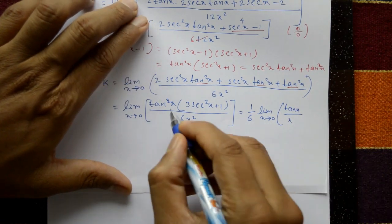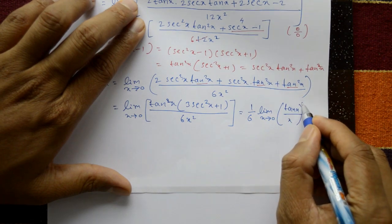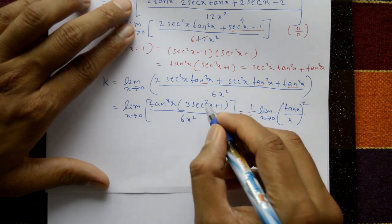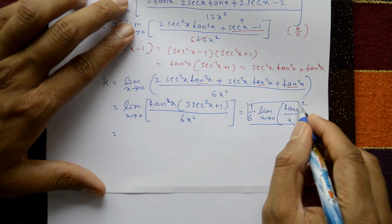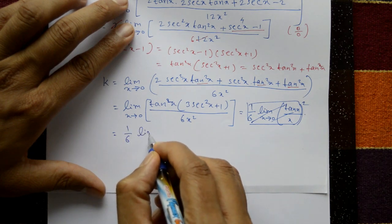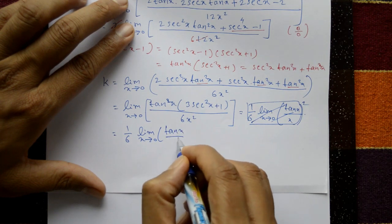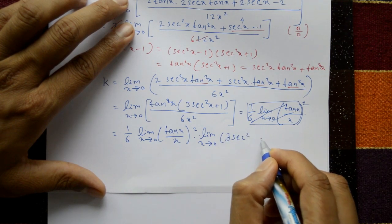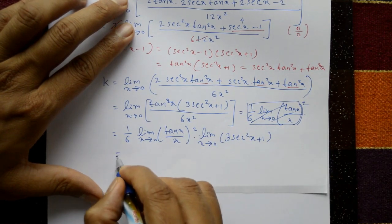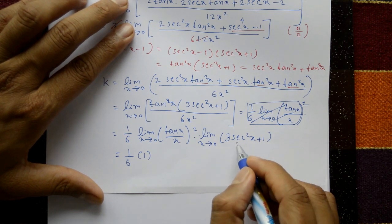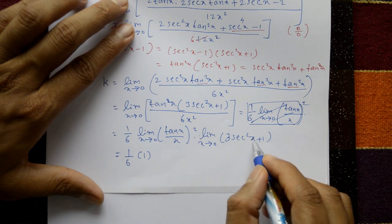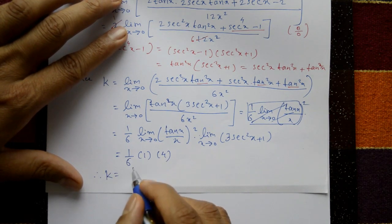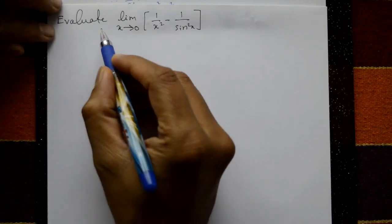Taking 1/6 outside: (1/6) times limit of (tan x / x)² times limit of (3·sec²x plus 1). The first limit equals 1, and applying x = 0: sec(0) = 1, so 3(1) + 1 = 4. Therefore k = 4/6 = 2/3. This is the required solution.